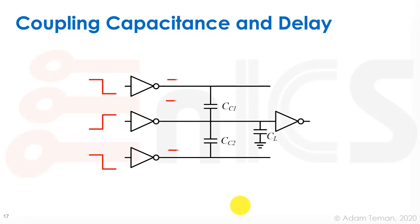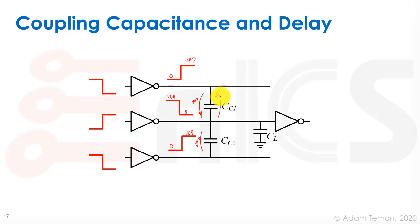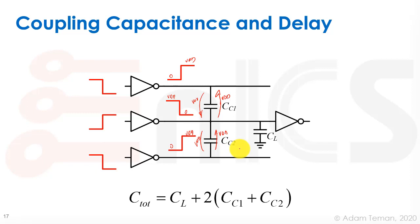The third case is when the middle driver (DUT) is rising while the neighbors are falling — opposite transitions. At t=0 there is a voltage of VDD across the coupling capacitors in one direction, and at t=1 there is VDD across them in the opposite direction — a total swing of 2×VDD. This means we have to change the charge in each coupling capacitor by double, so the effective capacitance is doubled. The total capacitance becomes C_L + 2×C_C1 + 2×C_C2 — a much worse noise effect.